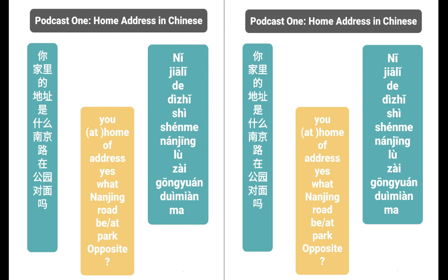Now the question was 在公园对面吗？ 公园 meaning 'park.' 公 means 'public' — like 公共 meaning 'public.' And 园 meaning 'park' or 'garden.' So 公园 is a public garden, which is a park.